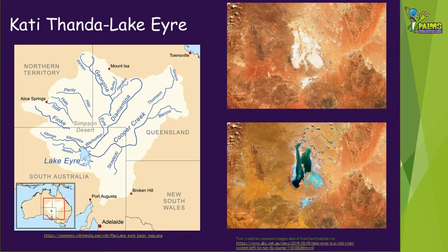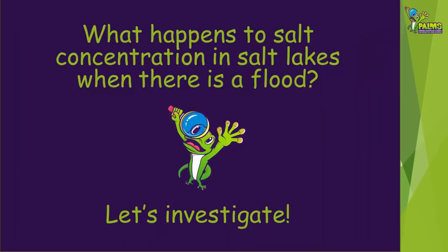An example of this is Kati Thanda–Lake Eyre in South Australia, which can change a lot when floodwaters collect here. What do you think happens to the salt concentration in salt lakes if there's a flood? Let's investigate.